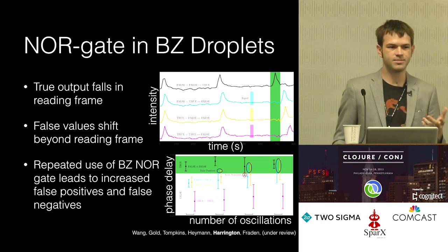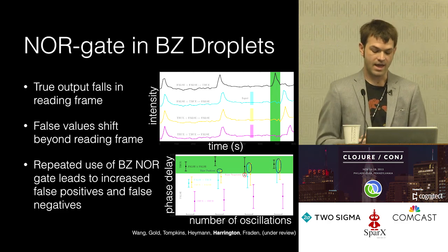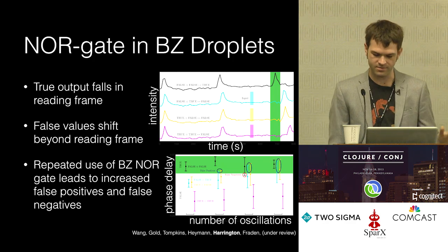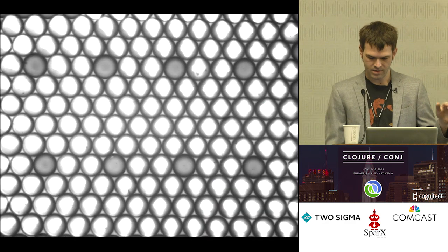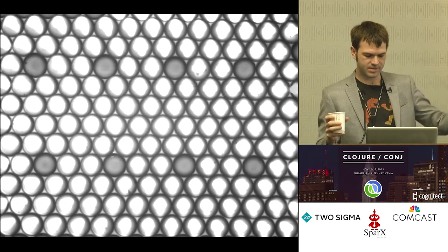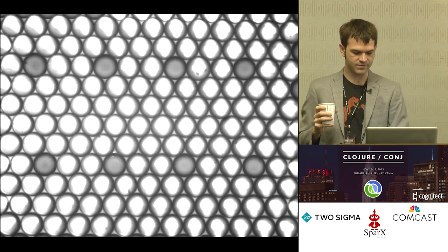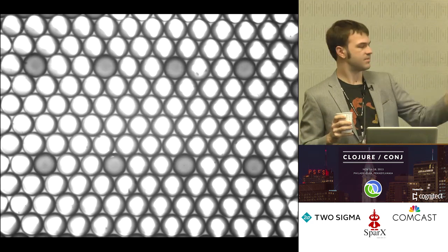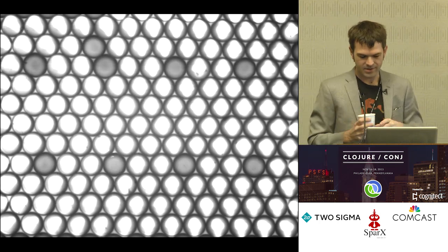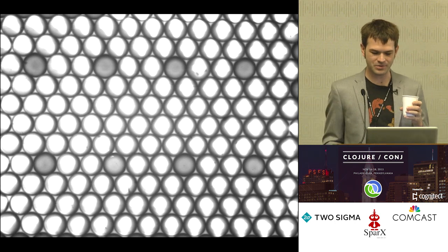A kicker: because acid is their fuel source, they eventually burn through all their fuel, and these gates decrease in quality over time. That's not particularly surprising for a wet system. Here's a demo of eight different logic gates being run at the same time with different combinations of inputs. Chemical computing has been floating around in the Clojure world recently.